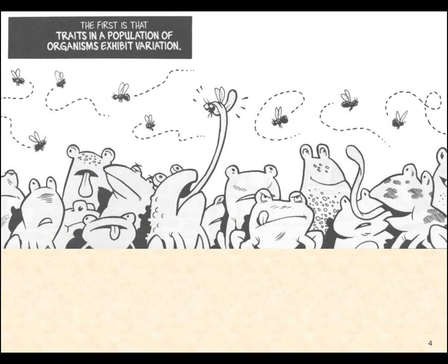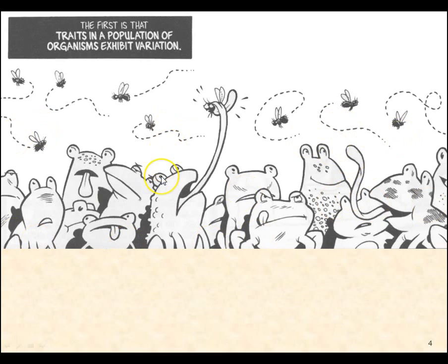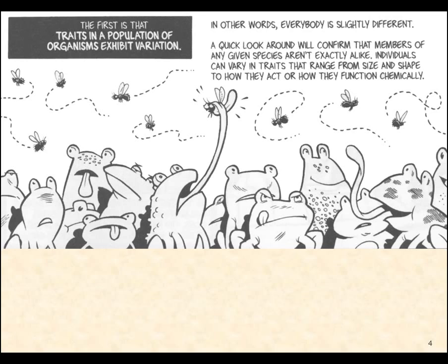Here we can take a look at some frogs. And, of course, there is variation in these frogs. Some of them have spots. Some of them have bumps. Some of them have angry eyes. Some of them have dots. And, of course, tongue length as well — this one here has a longer tongue. There is variation; even in this population, no two are going to be identical. There's always going to be a few differences.